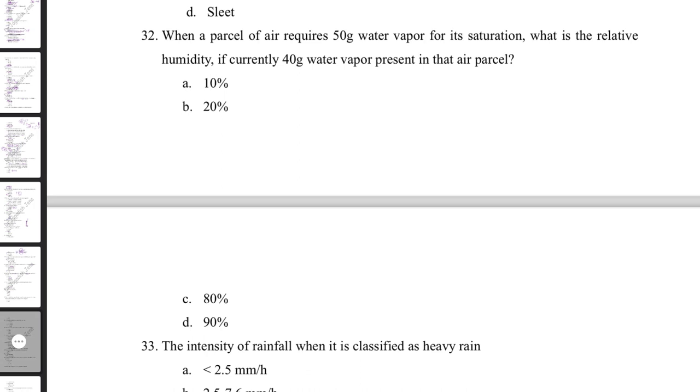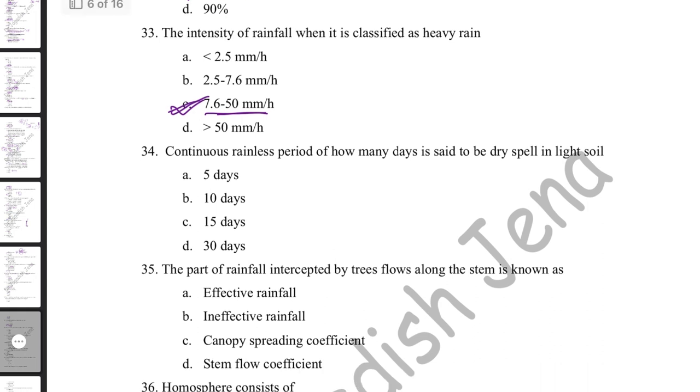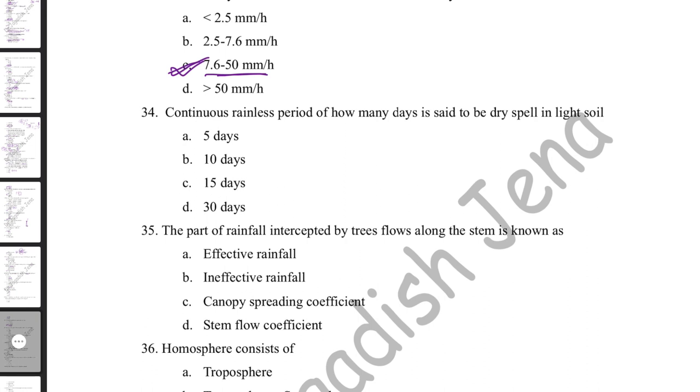The intensity of rainfall classified as heavy rain is 7.6 to 50 mm per hour. A rainless period of 10 or more days is called a dry spell in light soil, whereas in clay soil it is 15 days — because clay soil can hold moisture for a longer period.